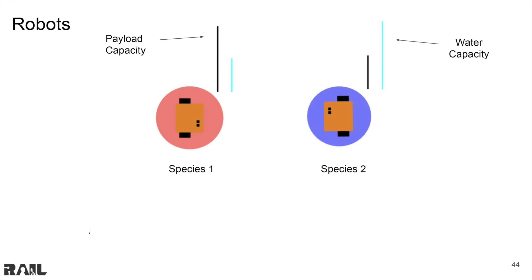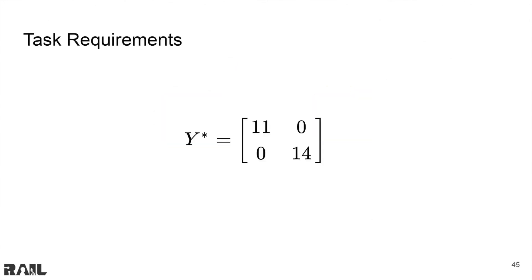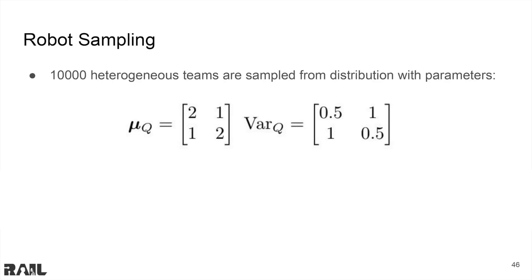In our experiment, species one had the dominant trait of payload capacity, and species two had the dominant trait of water capacity. Our heterogeneous team has six robots from species one and nine robots from species two. Here is the task requirement matrix, denoting that the debris task required 11 units of payload strength and the dousing task required 14 units of water capacity.